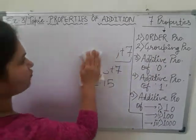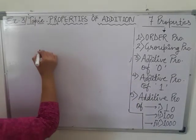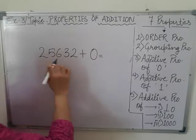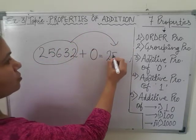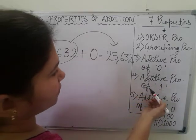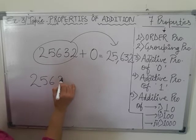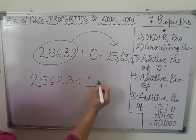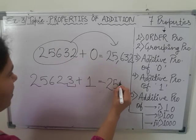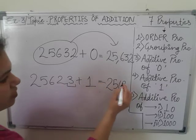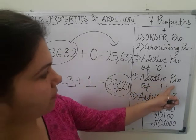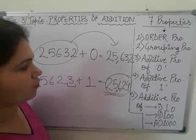Third property is additive property of 0, which means if we are having any large number and we are adding 0 to it, then the answer will be the number itself — 25,632. Fourth property is additive property of 1. According to this property, if we are taking any number and we are adding 1 to it, then the change only in 1's place and this digit will increase by 1, which means 25,623 will increase to 25,624. So by adding 1 to any number, we get the successor of the number.